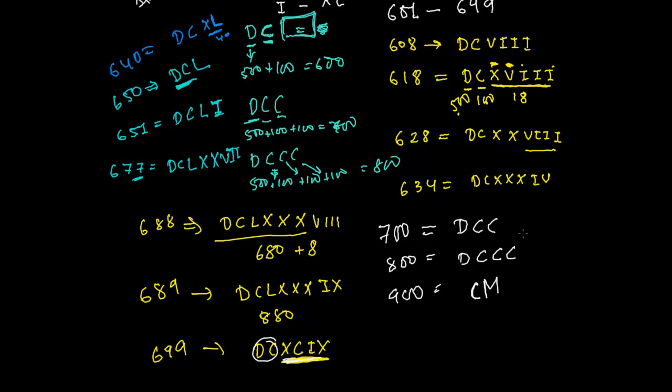Now you know how to add whatever you want to write. Like if you want to write 740, then you just put here 40. The value of 40 is XL. DCCXL is 740. If you want to write 760, you add 60, which is LX. DCCLX is 760. For 990, you add 90 to 900. What is 90? XC. CMXC is 990.